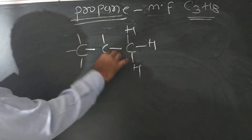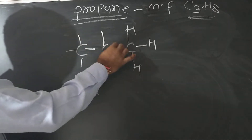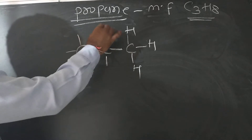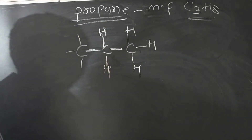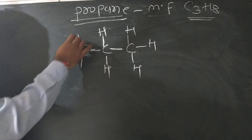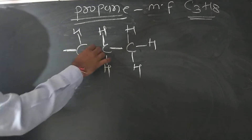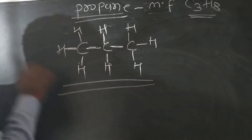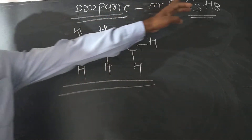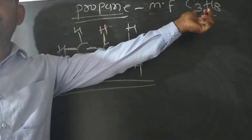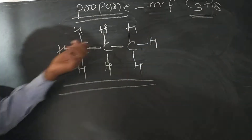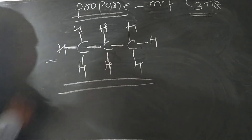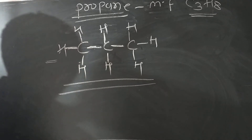Now consider the second carbon: bonds one, two, three, and four — but two bonds are empty, so write hydrogens here and here. For the third carbon, bonds one, two, three, and four — so write three hydrogens here. This is the structural formula of propane. The molecular formula of propane is C3H8, and its structural formula or line structure is as drawn.